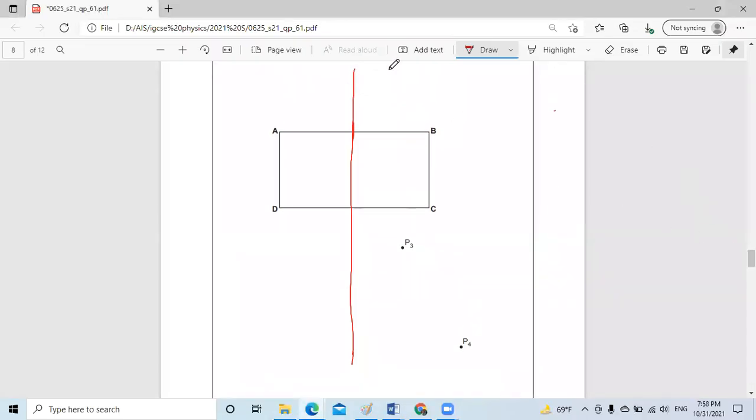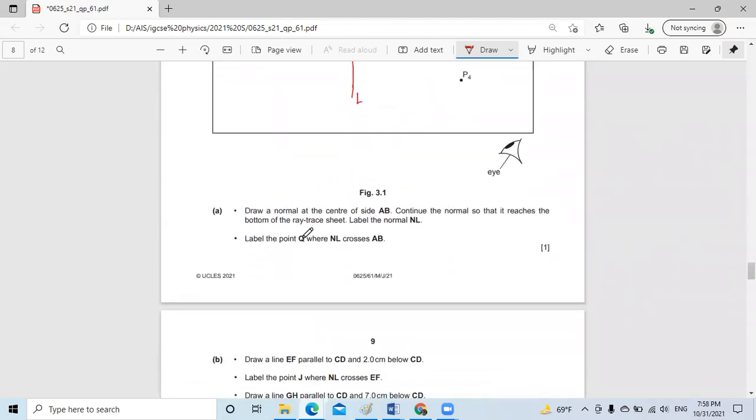So as you can see, this is the normal. We will label it NL, and it's supposed to be a straight line. Then what they ask here: label the point Q where NL crosses AB.